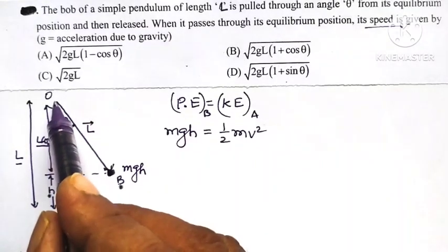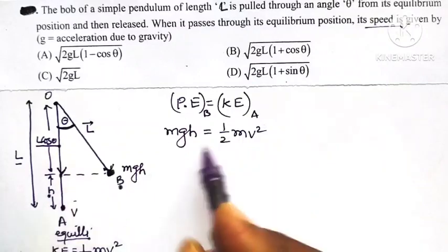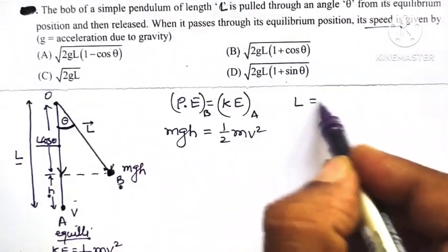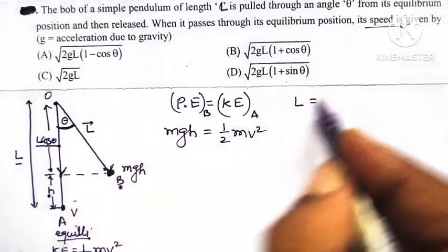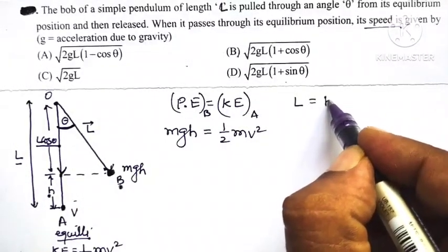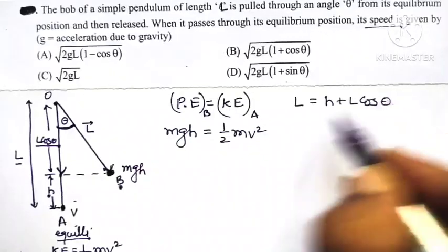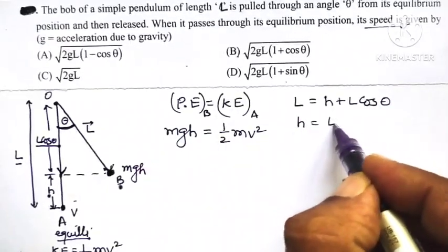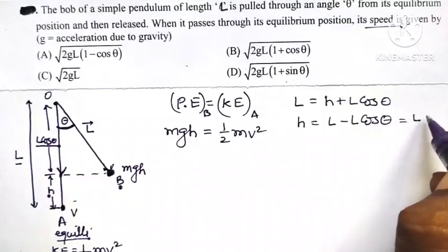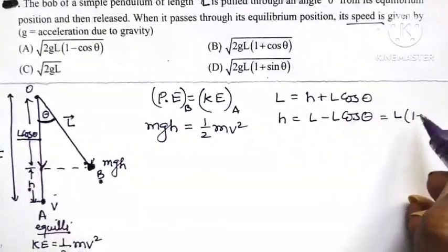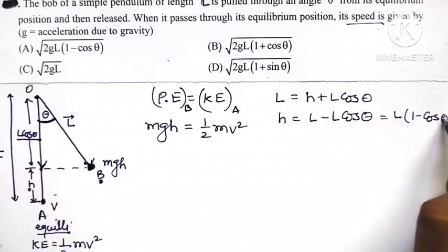From the figure, OA equals h plus L cos theta. Therefore, height h equals L minus L cos theta, which equals L(1 - cos theta).